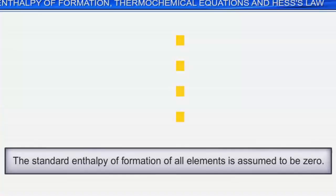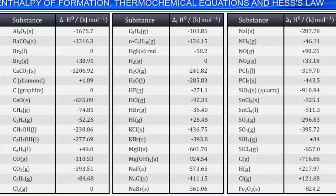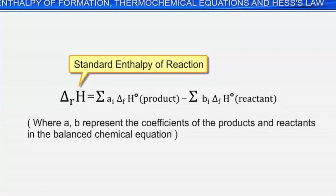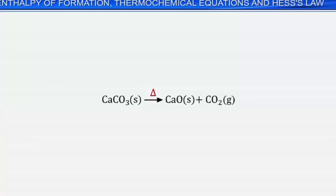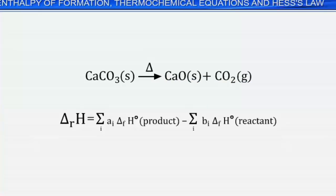We can calculate the heat of reaction under standard conditions from the values of standard heat of formation of various reactants and products. The standard enthalpy of reaction can be calculated as the sum of standard enthalpies of formation of products minus the sum of standard enthalpies of formation of reactants. Let's see how we can apply this formula.